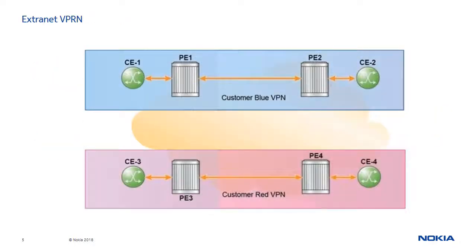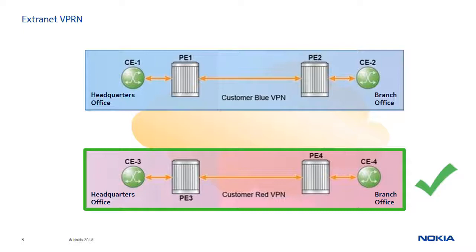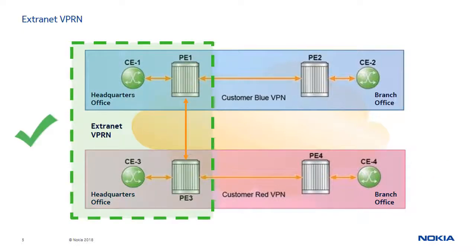Here is a typical example of an Extranet VPRN. The head offices of two separate companies, CE1 and CE3, wish to share routes in order to access resources, while the branch offices CE2 and CE4 are kept separate from each other. The Extranet topology permits access between CE1 and CE2 in the same blue VPN, between CE3 and CE4 in the same red VPRN, and between CE1 and CE3, the two headquarter sites of the blue and red VPNs.